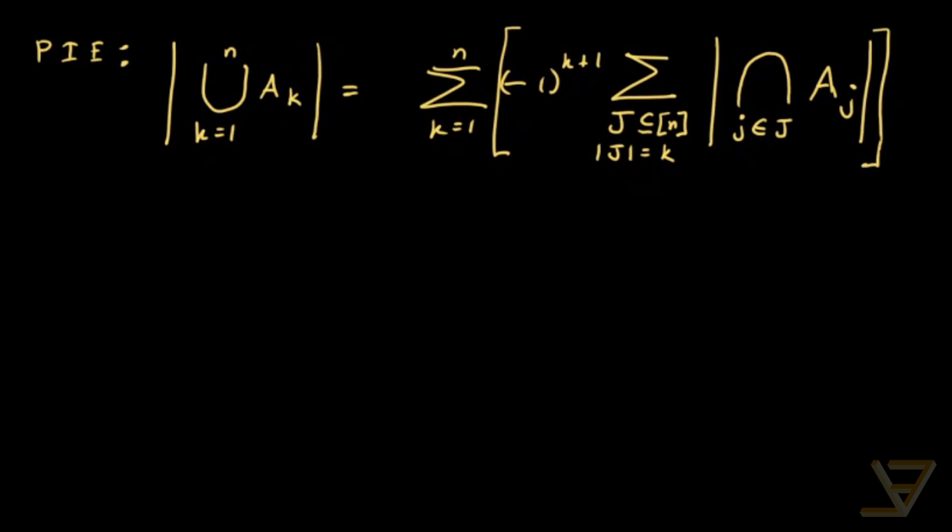Little j in capital J of the intersection of the a little j's. So that's what the principle of inclusion and exclusion says, and we have a separate video about it if you want to check that out. And we're going to be needing this.